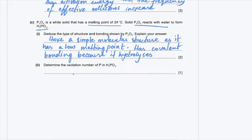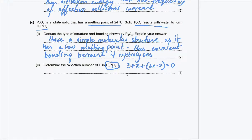The overall oxidation state of phosphorous acid H₃PO₃ is 0. Hydrogen has +1 and there are 3 atoms, giving +3. Phosphorus is unknown, assumed X with 1 atom. Three oxygen atoms each with −2 gives −6. So: 3 + X − 6 = 0, giving X = +3. The oxidation state of phosphorus in phosphorous acid is +3.